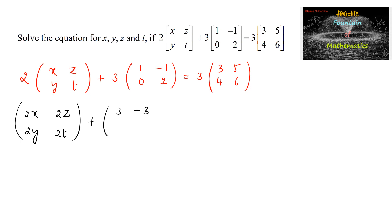3 times negative 1 is minus 3, 3 times 0 is 0, 3 times 2 is 6 is equal to 3 times 3 is 9, 3 times 5 is 15, 3 times 4 is 12, 3 times 6 is 18.